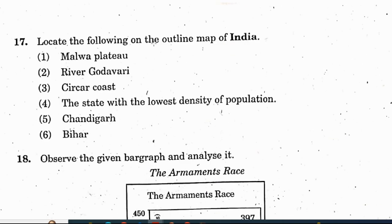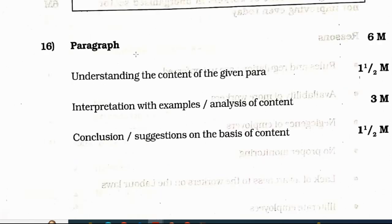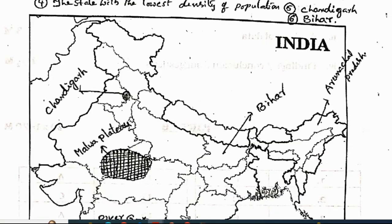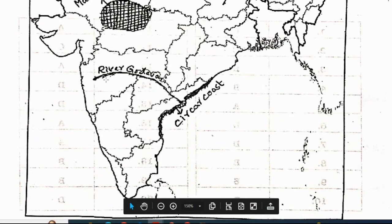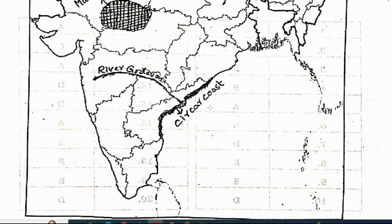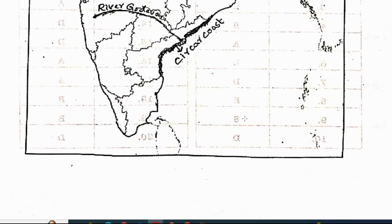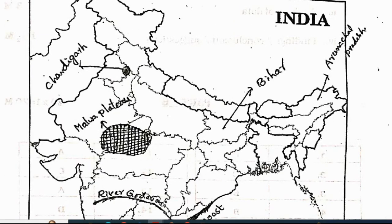Question 17: locate the following on the outline map of India — Malwa Plateau, River Godavari, Sircars coast, the state with the lowest density of population, Chandigarh, Bihar. Chandigarh is marked here. Malwa Plateau in the shaded region. Bihar, Arunachal Pradesh (lowest density state), River Godavari, and Sircars coast. These are the six questions given in the question paper.